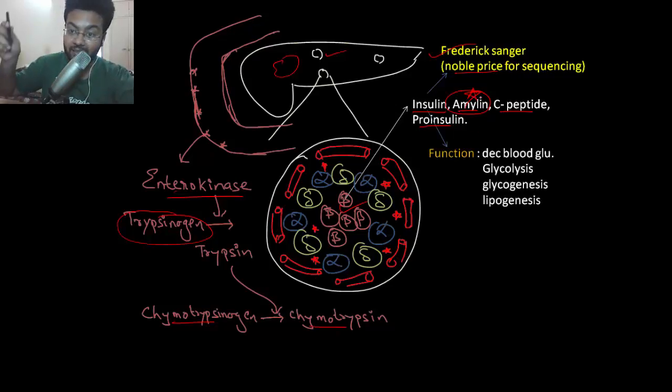What's the function of insulin? Of course, it decreases the blood glucose. It sends glucose to liver and skeletal muscle. It breaks down glucose, the process called glycolysis. Converts into glycogen called glycogenesis. And also promotes lipid formation as well, lipogenesis.